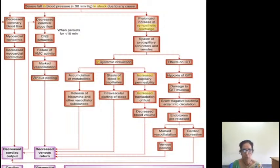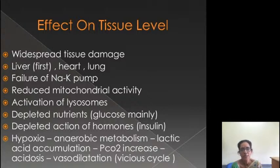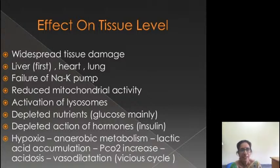Here, one thing is leading to the other and the vicious cycle sets in. Without proper treatment, this vicious cycle sets in and it has to lead to the third stage of shock. So what will happen at the tissue level in progressive shock? There will be widespread tissue damage because there will be widespread deterioration of the tissues. The organs with a high metabolic rate get damaged first. Liver is the first organ to get damaged, then the heart and the lungs.